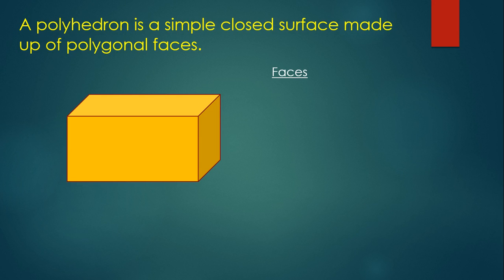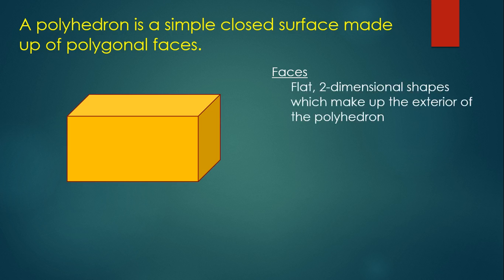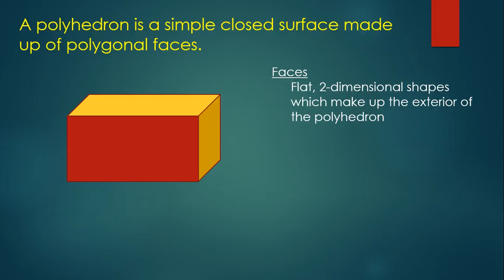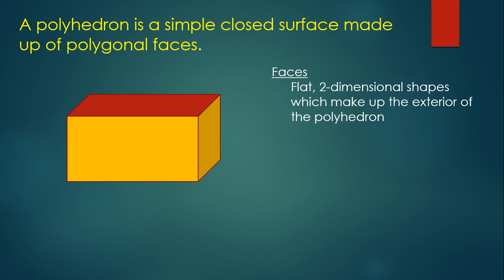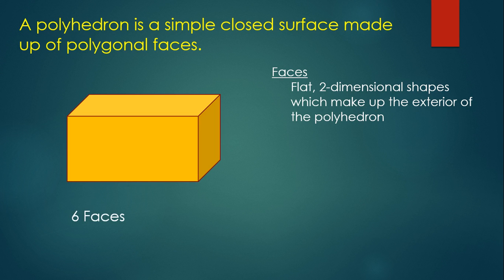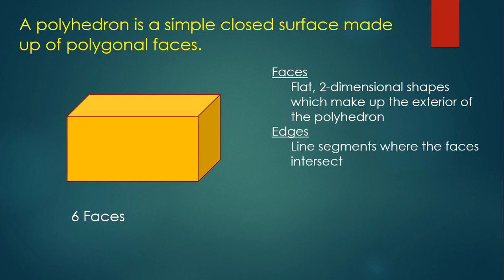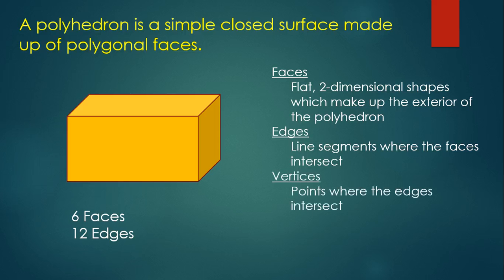These are made up of faces, which are those flat two-dimensional shapes that make up the exterior of the shape. In this case, for this rectangular prism, it has six faces. The edges are those line segments where the faces intersect, so this rectangular prism has 12 edges. And the vertices are the points where all of those edges intersect, so this rectangular prism has a total of eight vertices.